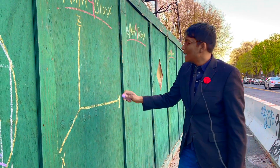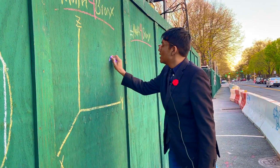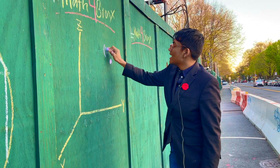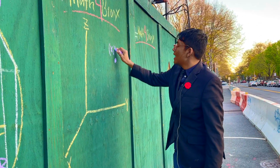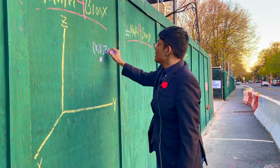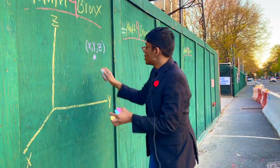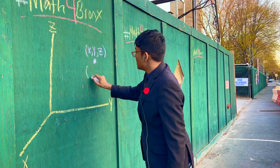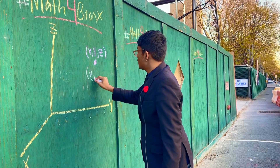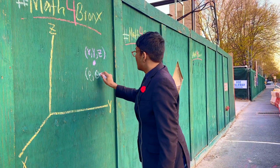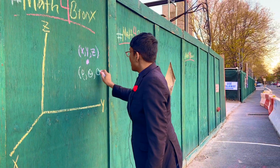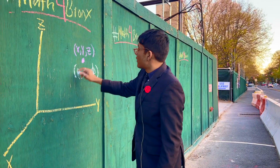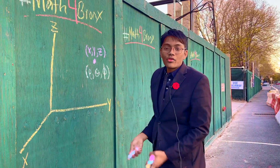How can I take this point from rectangular coordinates x, y, z to spherical coordinates, which are rho, theta, phi? How can I make that transformation from x, y, z to rho, theta, phi?